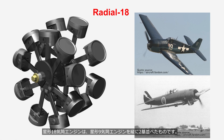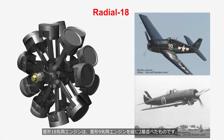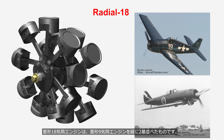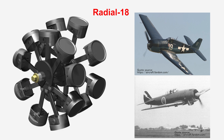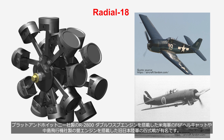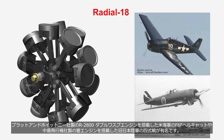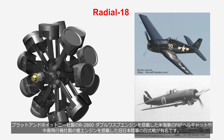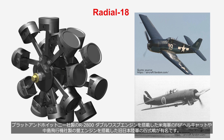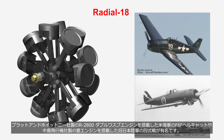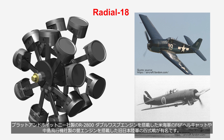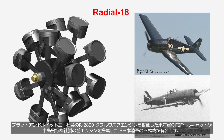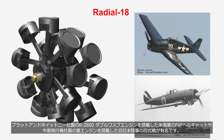The radial 18-cylinder engine is a configuration in which two radial 9-cylinder engines are arranged vertically. The F6F Hellcat of the U.S. Navy, equipped with the Pratt & Whitney R-2800 Double Wasp engine, and the Type 4 fighter of the Japanese Imperial Army, equipped with the Nakajima aircraft Homare engine, are famous examples.